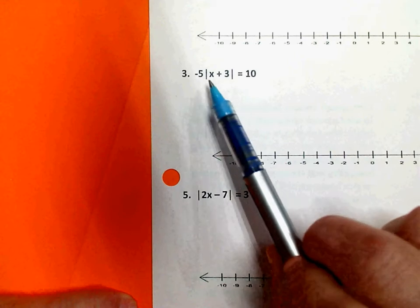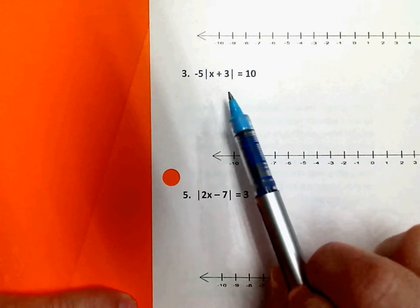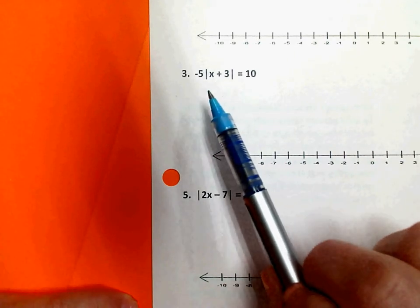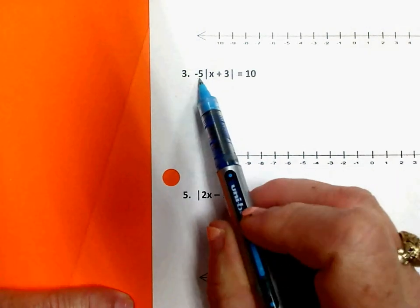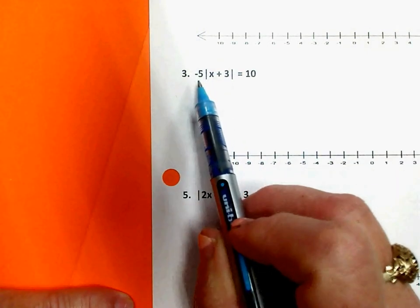But just like the inequalities, before I can begin finding my two solutions, I have to isolate the absolute value bars. So this negative 5 that is outside of the bars needs to move.